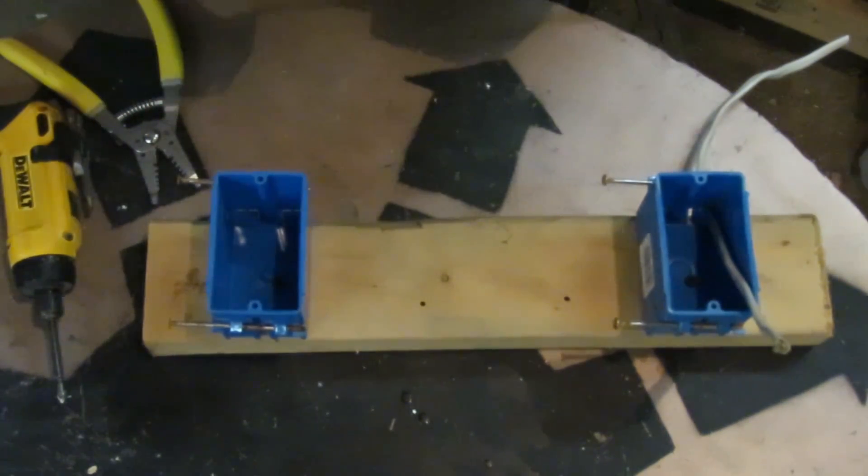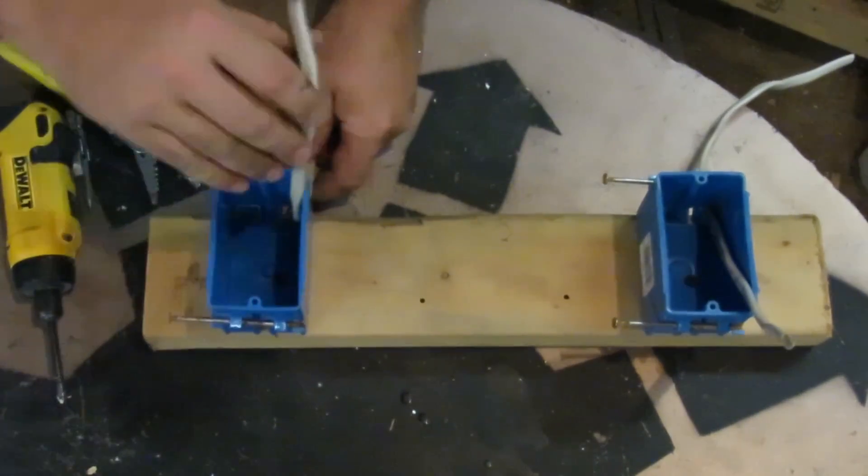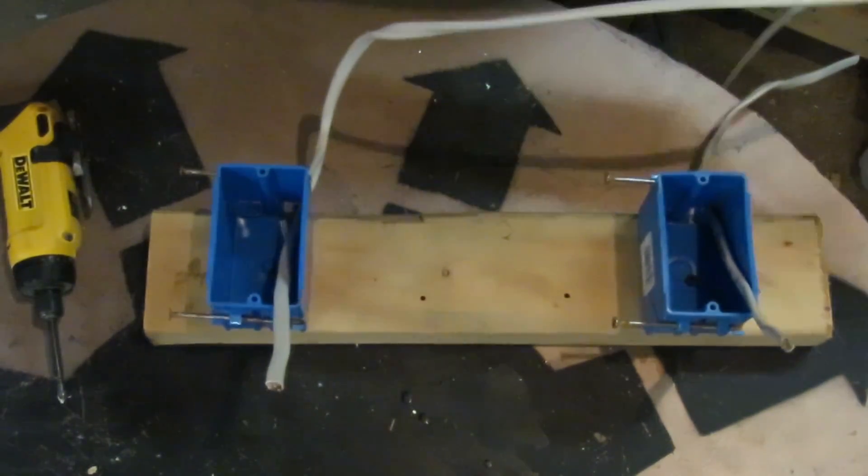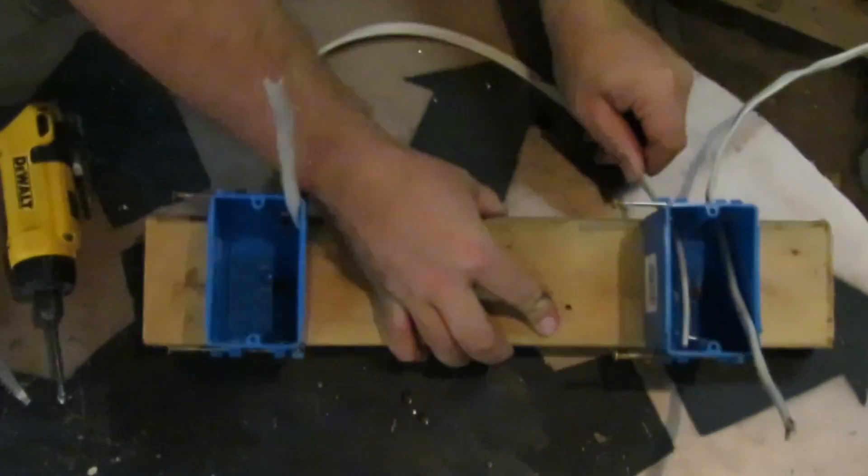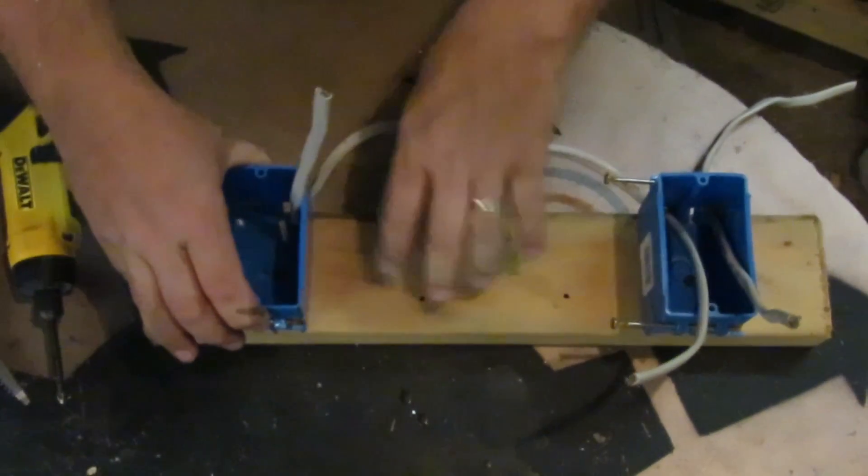Now 14-2 wire is 14 gauge wire with two conductors and a ground. The conductors are the black wire and the white wire. The white wire would typically be your neutral and the black would typically be your hot.